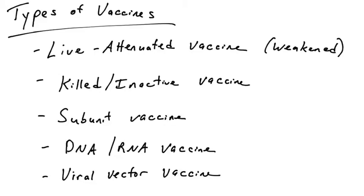Hi there. In the previous video, we talked about live attenuated vaccines, which really provoke an excellent immune response, typically lifelong, because those are real infections. You are infected by a pathogen, but it's not causing disease. Your immune system responds by generating a very strong adaptive immune response — T cells and B cells — and that typically results in lifelong immunity because of the production of memory B cells and memory T cells.